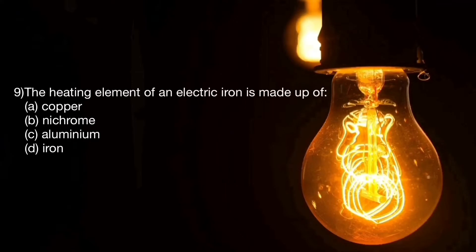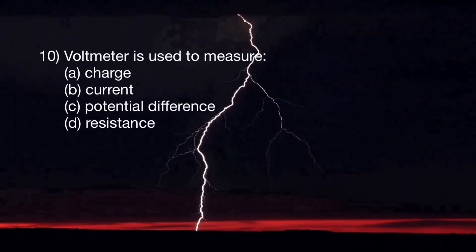Question number nine: the heating element of an electric iron is made up of — A: copper, B: nickel, C: aluminum, D: iron. Question number ten: a voltmeter is used to measure — A: charge, B: current, C: potential difference, D: resistance.